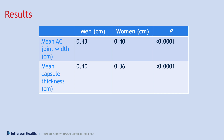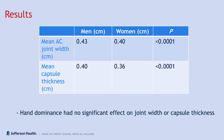This slide shows that there is a significant difference in both average joint width and capsule thickness between men and women. In women, these values are lower and statistically significant. However, the difference between men and women in both scenarios is not necessarily measurable in practice. In addition, hand dominance had no significant effect on either joint width or capsule thickness.